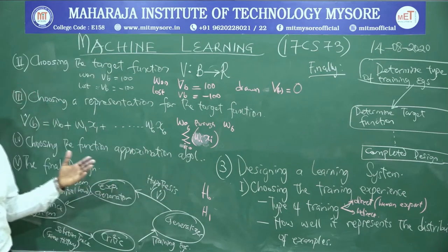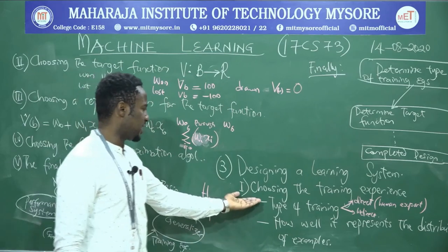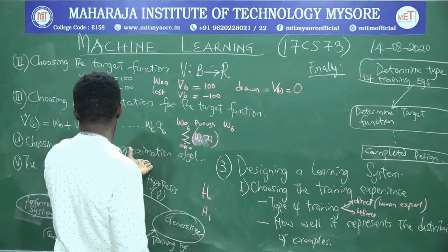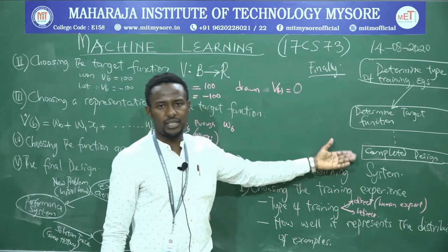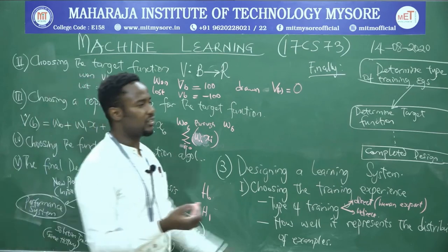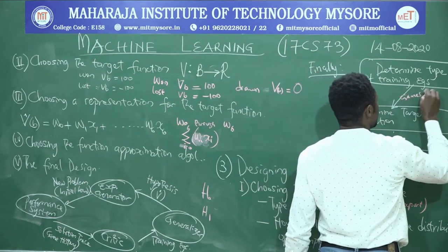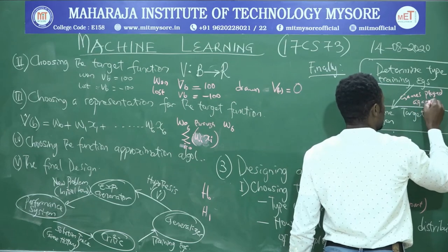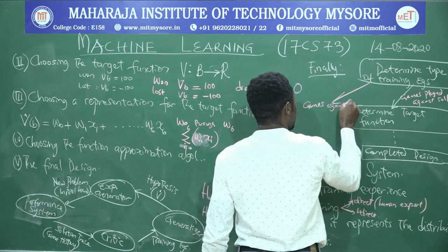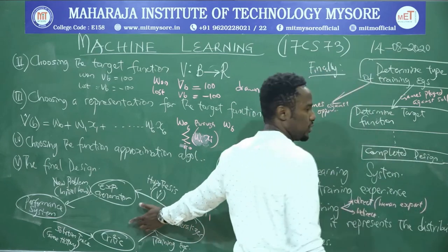So the five steps of designing a learning system are: determine the type of training examples, determine the target function, choose the representation, choose the function approximation algorithm, and the final completed design. Some possible training combinations include games played against itself and games played against opponents.